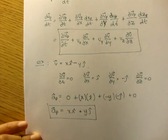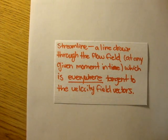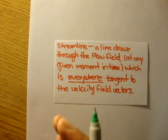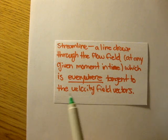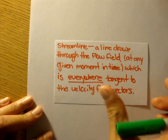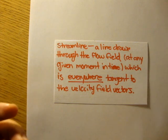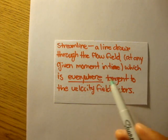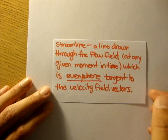Now, this actually brings us to streamlines. Let's define a streamline really quickly. A streamline is a line drawn through the flow field — the velocity flow field — at any given moment in time, which is everywhere tangent to the velocity field vectors. The best way to find these streamlines is to find the differentials of the x, y, and z components of the flow field — these lines drawn onto the flow field.